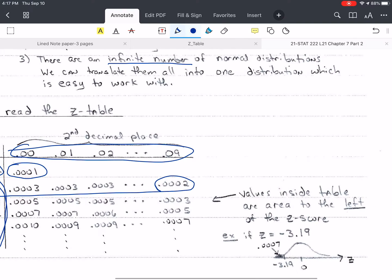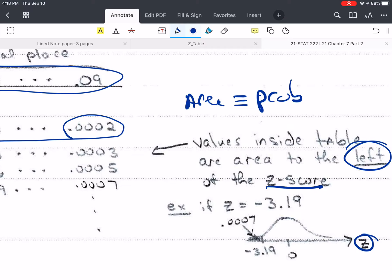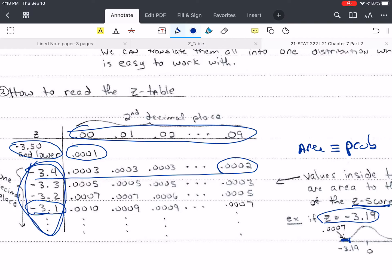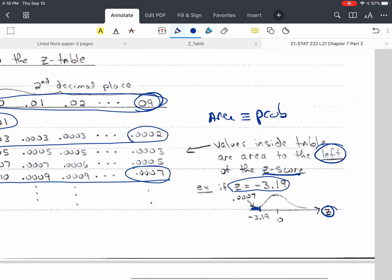And we'll talk about what that means. So the values inside the table are area. They're also probability. Area and probability are going to be the same thing for these tables. And this is the area to the left of the z-score. So here we have z. I've drawn the picture, and I've plotted zeros in the middle always for the z. And so I've plotted negative 3.19, and then we shade in the area for less than. And so z is negative 3.19, and I come over, and I look at negative 3.1, and then I find the 9 up above, which is the second value, and so that's 0.0007. So there is 0.0007 area or probability below or to the left of negative 3.19.